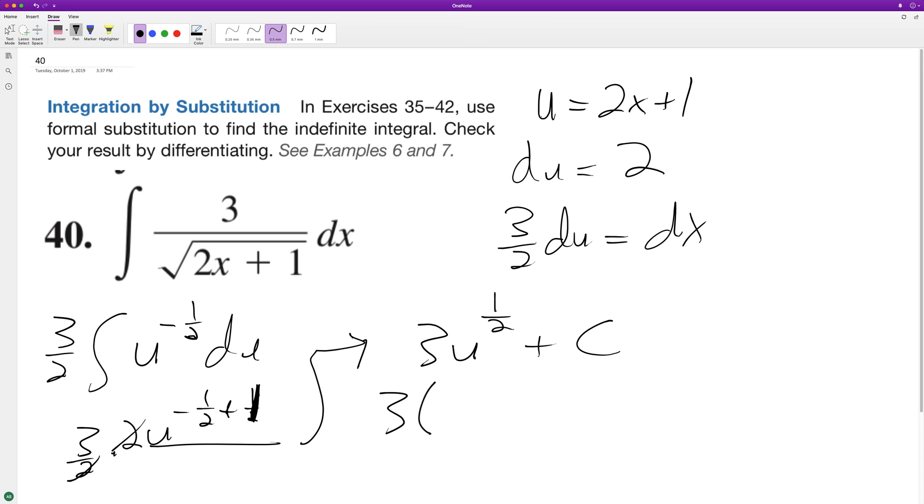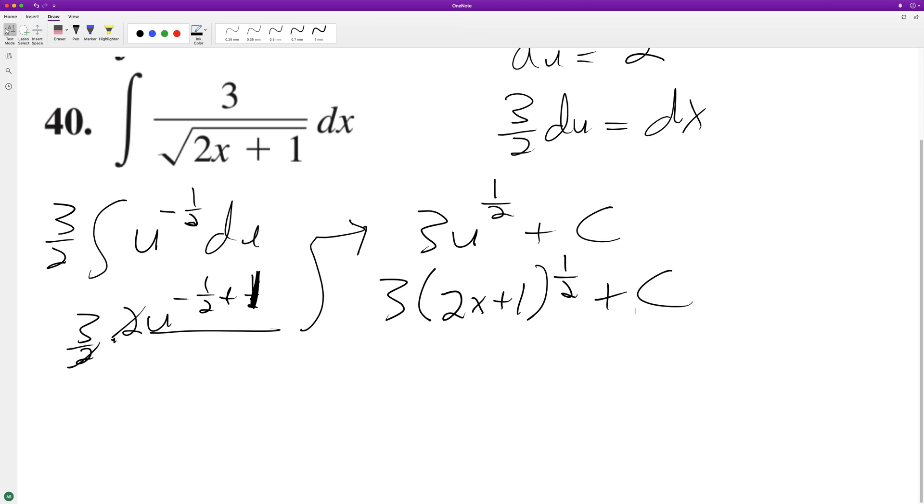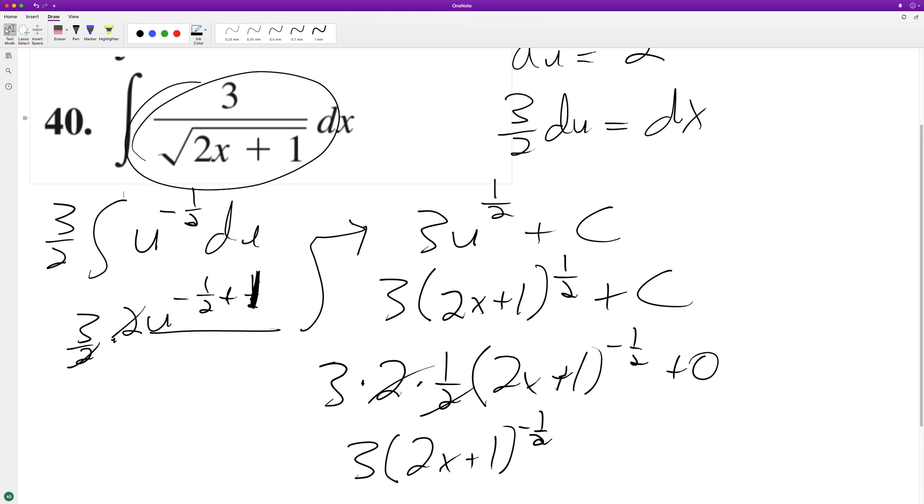And 3 times quantity 2x plus 1 raised to the 1 half, which is the same thing as the radical. All right, and that's the final integration. But let's take the derivative to test this out. So 3 times 2 times 1 half times 2x plus 1, subtract 1 from it, we get to negative 1 half and then plus 0. So these cancel off and we're left with 3 quantity 2x plus 1 raised to negative 1 half, which matches up with our original statement, which means that this is the correct integration.